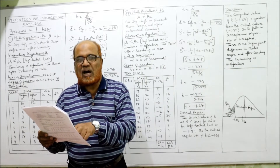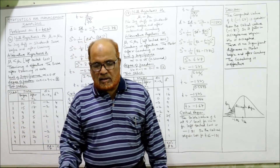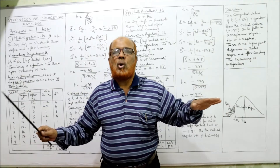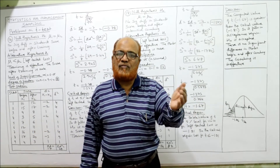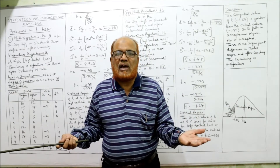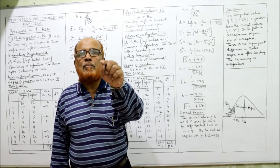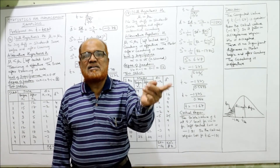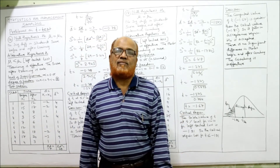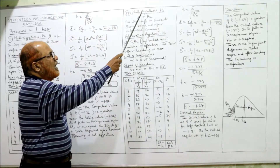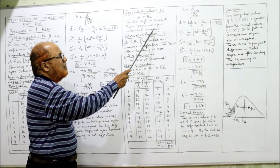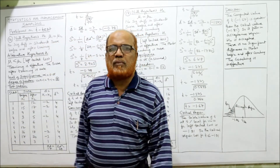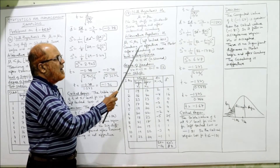Since a test was conducted before and after coaching, this is a paired t-test. Null hypothesis: μ₁ = μ₂ — no significant difference in student scores before and after intensive coaching. Alternative hypothesis H₁: μ₁ < μ₂ — the marks before coaching are less and after coaching are more, meaning coaching is effective. This is a left-tail test.